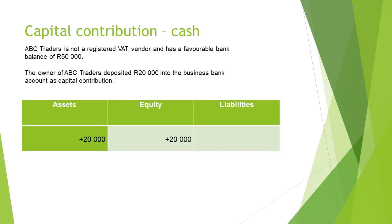ABC Traders is not a registered VAT vendor and has a favourable bank balance of 50,000 rand. The owner of ABC Traders deposited 20,000 rand into the business bank account as a capital contribution. A capital contribution increases equity. Therefore, we will indicate it on the accounting equation with a plus 20,000 rand. The capital account is credited.